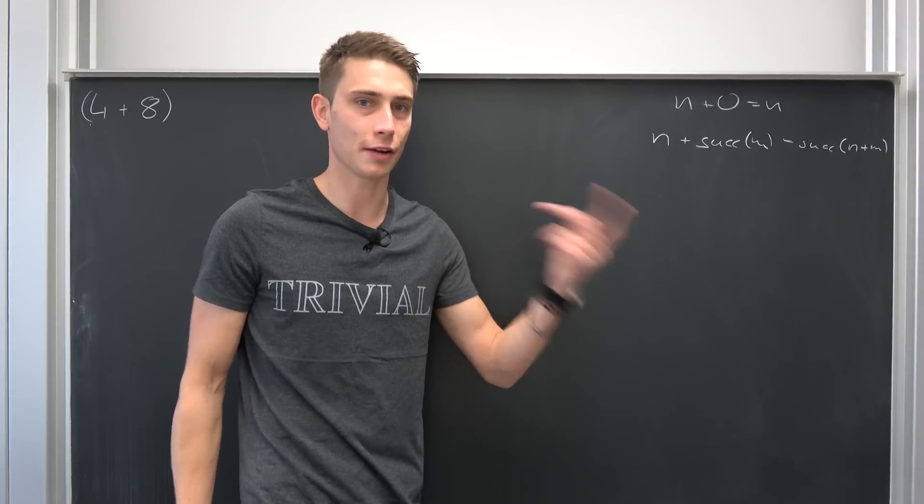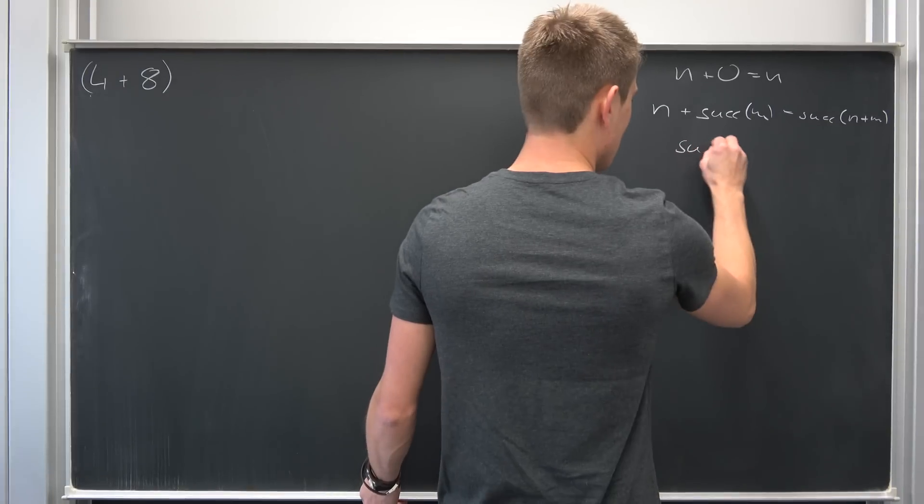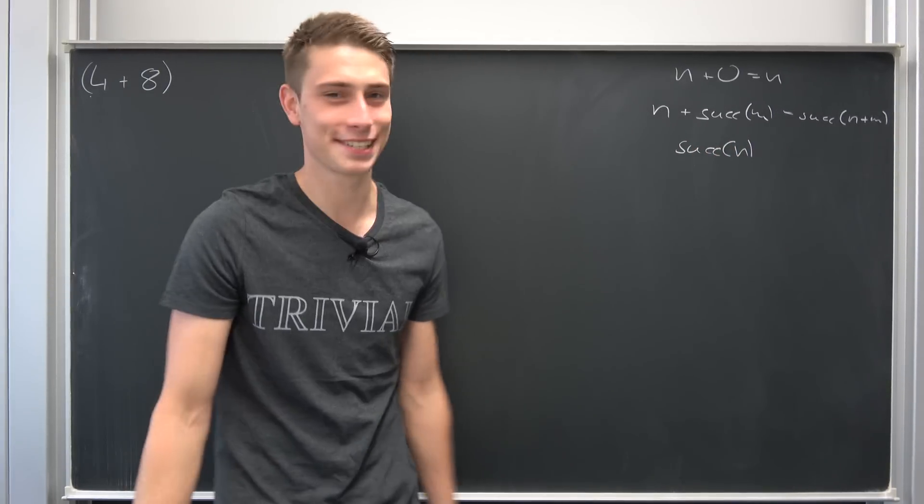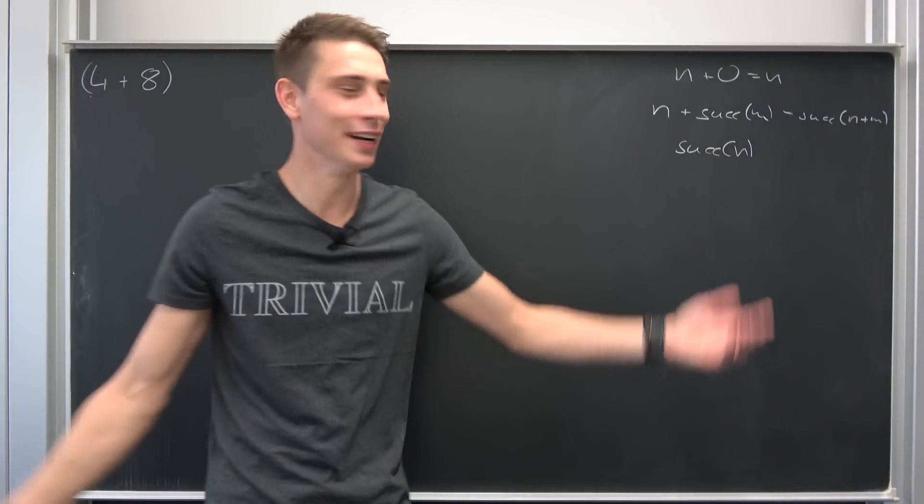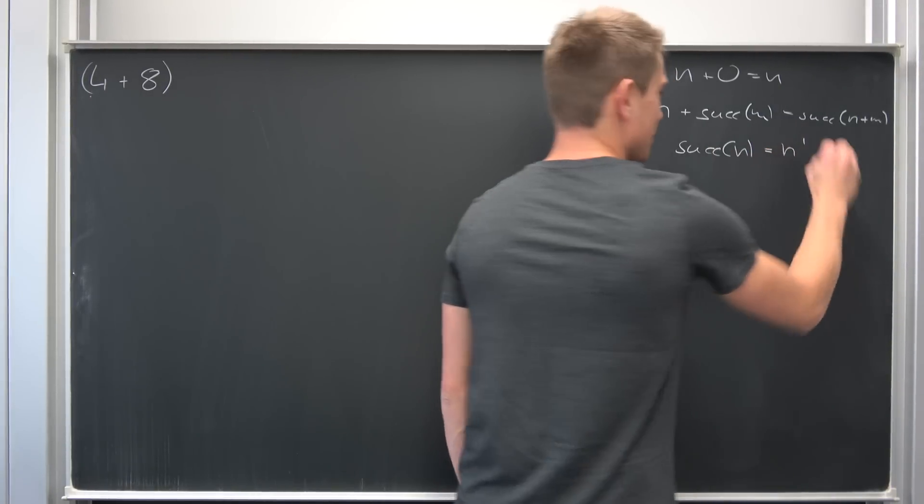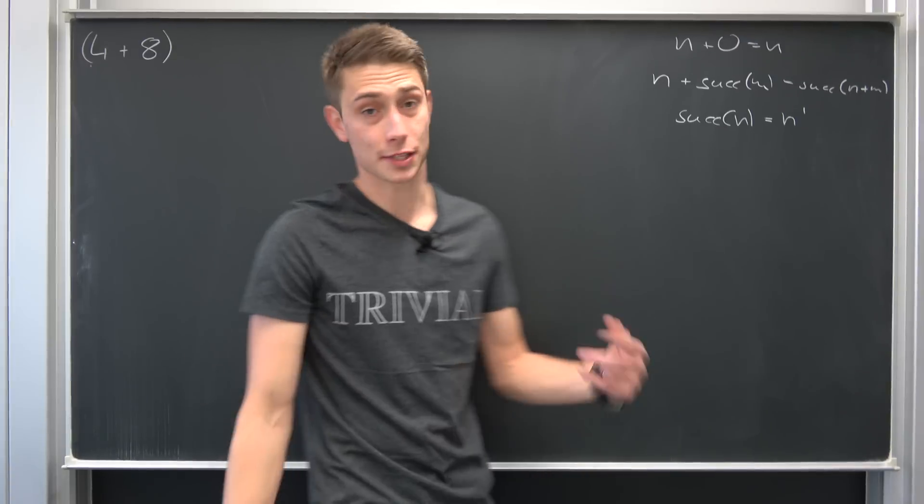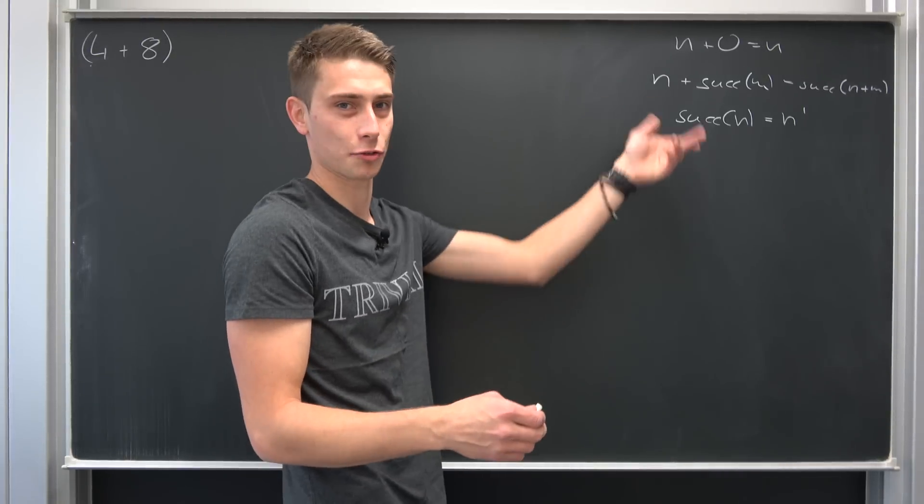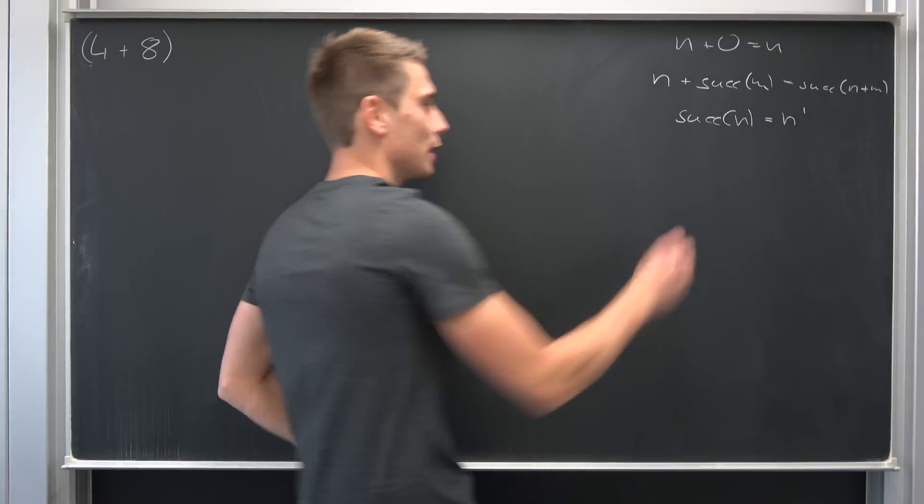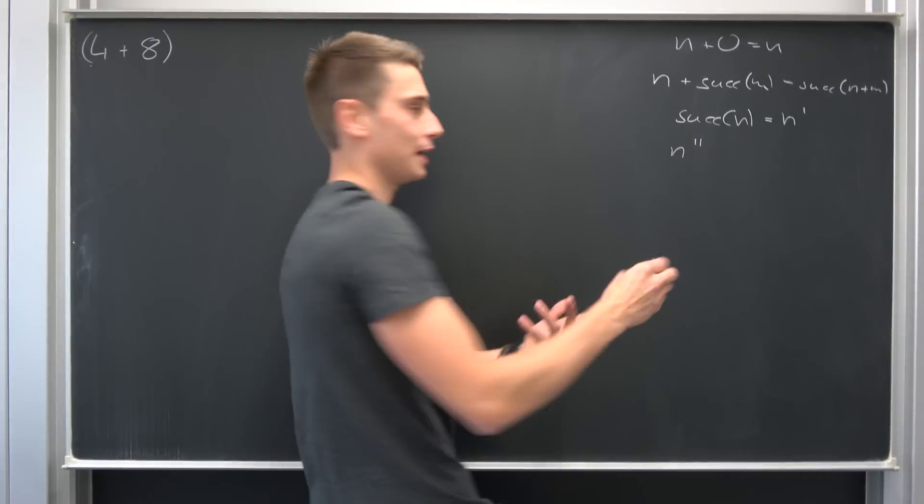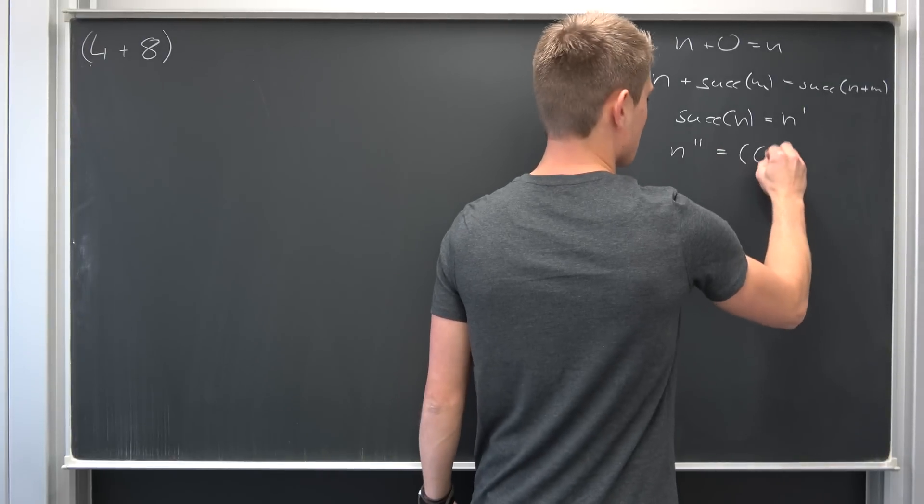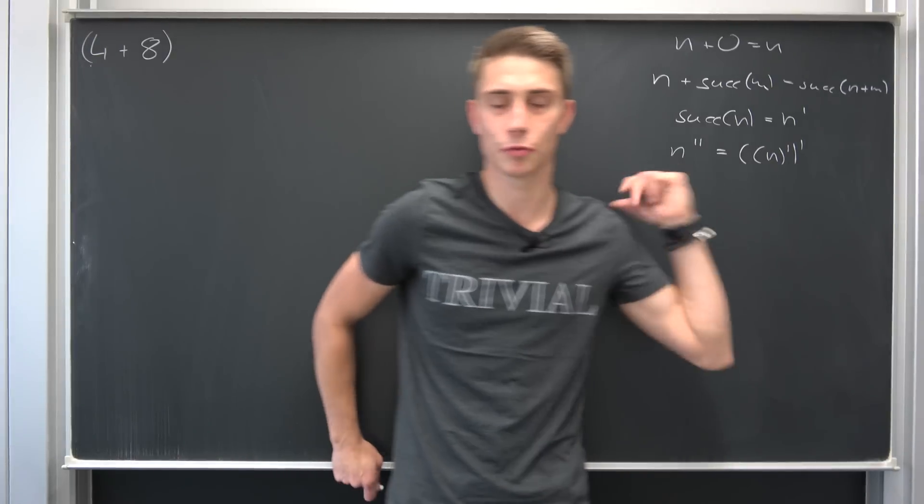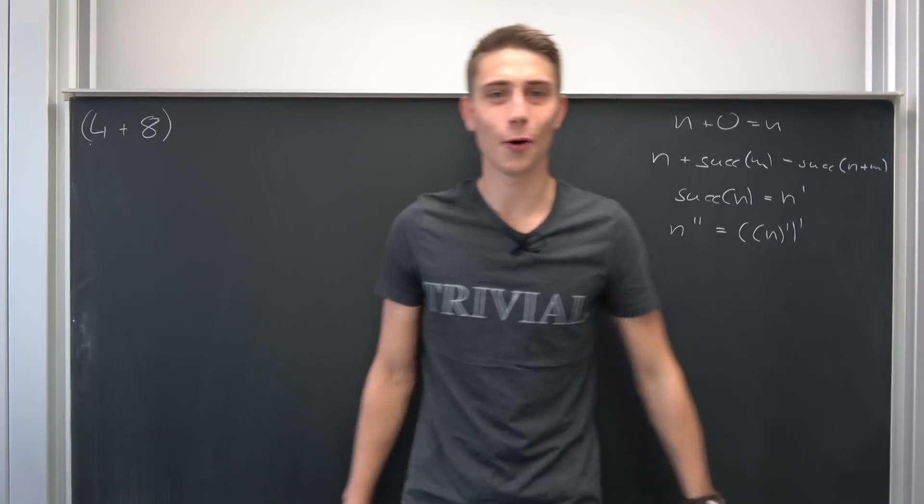And also for simplification purposes if we have the successor of some number n, suck of n. You see this notation fucking sucks balls. It's just so good. It's such a fucking meme. Then we are going to denote the successor as just n prime. Also, if we have the successor of the successor of n, for example, we are not going to denote it as suck of suck of n. It double sucks. No, we are going to denote it by n double prime and also not by parentheses parentheses n prime. That would be an absolute mess. So this is just what we are going to do and with those little rules we can already get started.